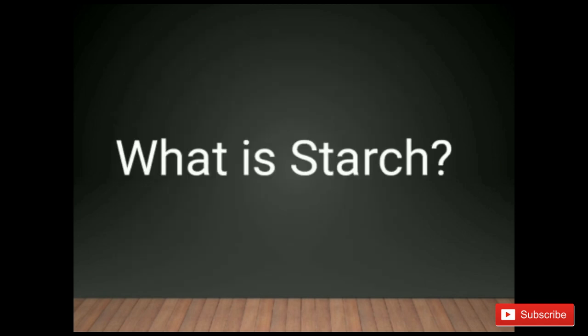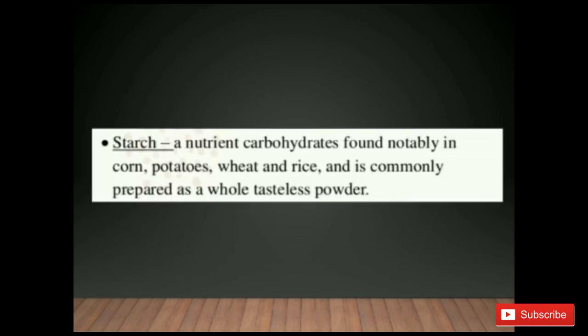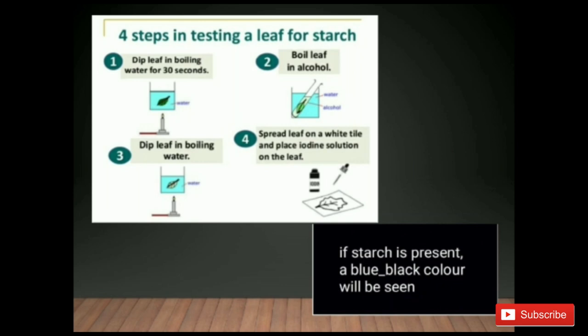The next topic is starch. Starch is a nutrient carbohydrate found notably in corn, potatoes, wheat and rice, and is commonly prepared as a white tasteless powder. Here is an experiment — there are four steps in testing a leaf for starch: first, dip the leaf in boiling water for 30 seconds; second, boil the leaf in alcohol; third, dip the leaf in boiling water again; fourth, spread the leaf on a white tile and place iodine solution on it. If starch is present, a blue-black colour will be seen.